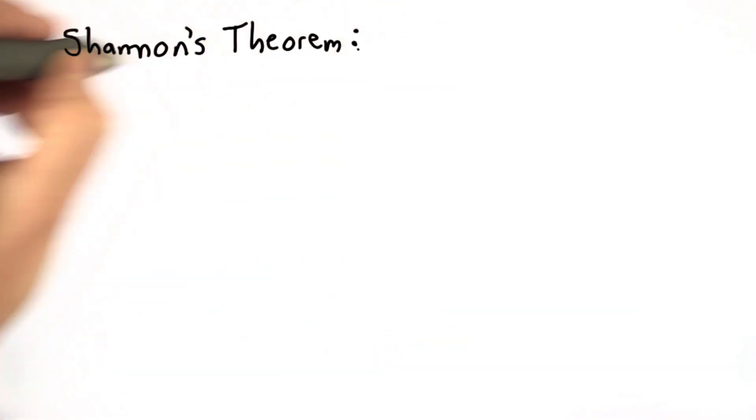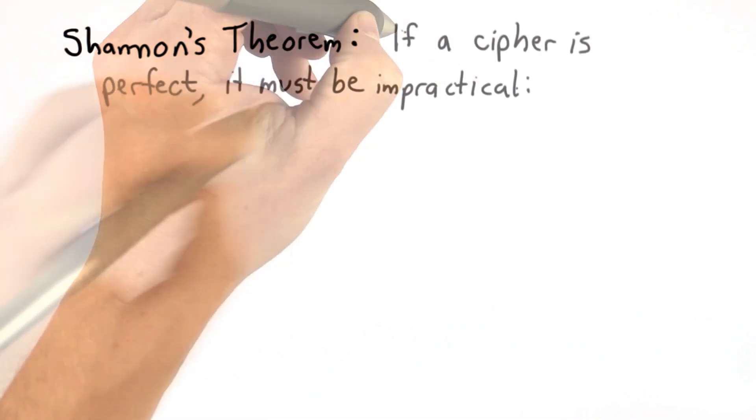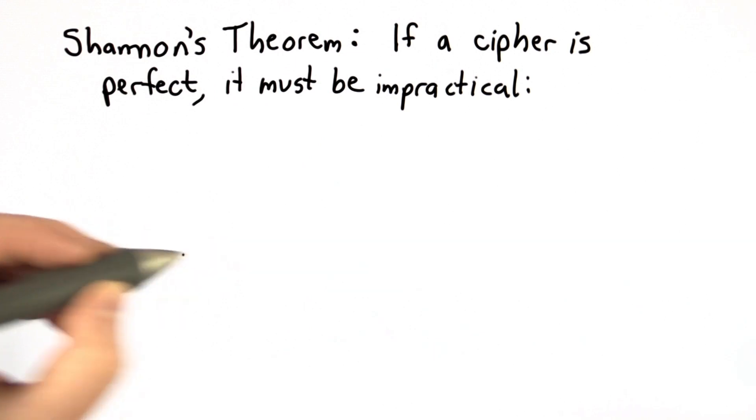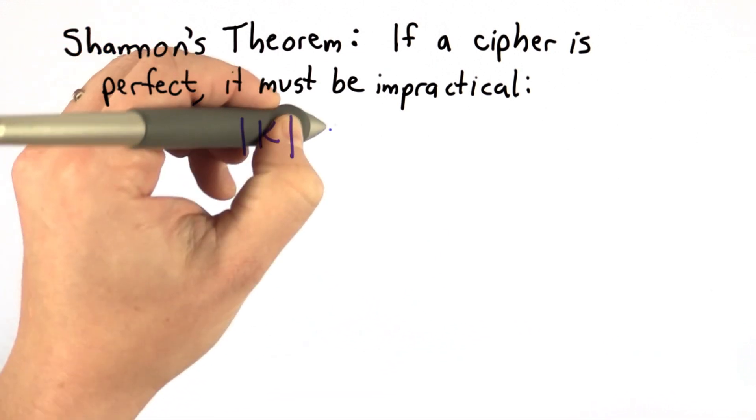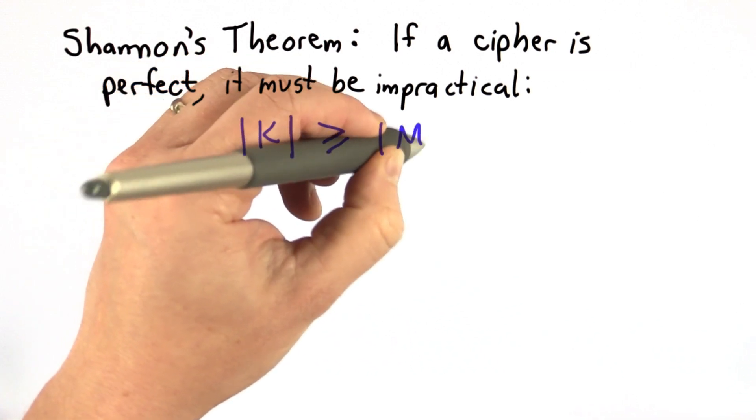And what the theorem essentially says is that if a cipher is perfect, it must have this property. It must be impractical in the sense that the number of possible keys must be at least as big as the number of possible messages.